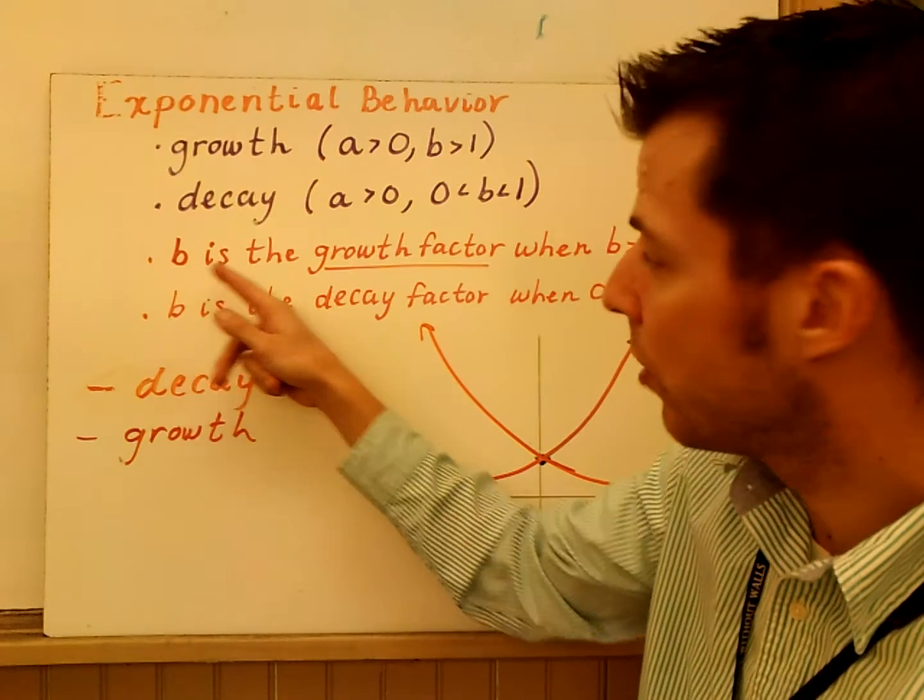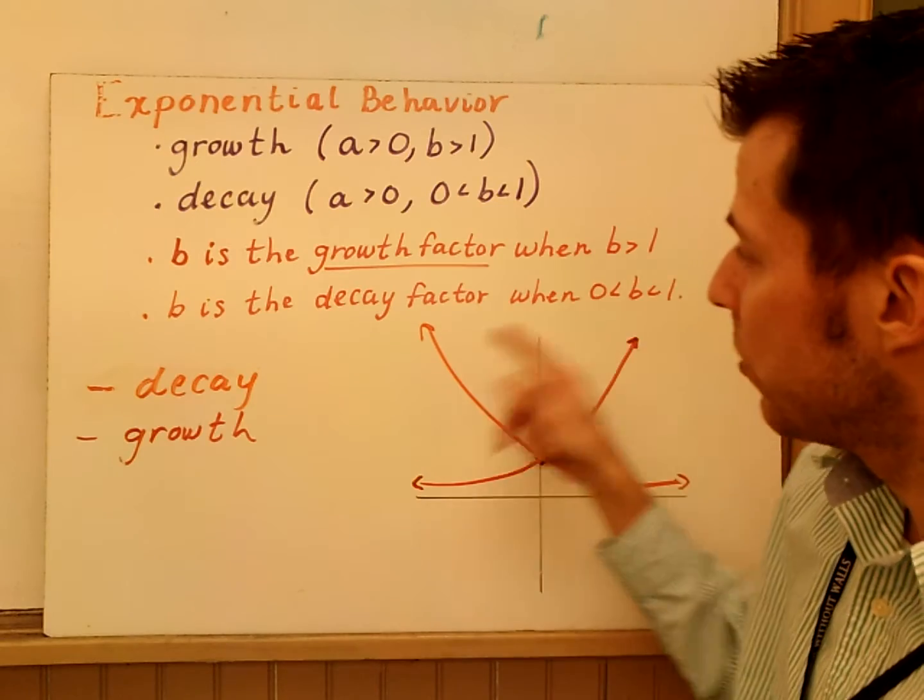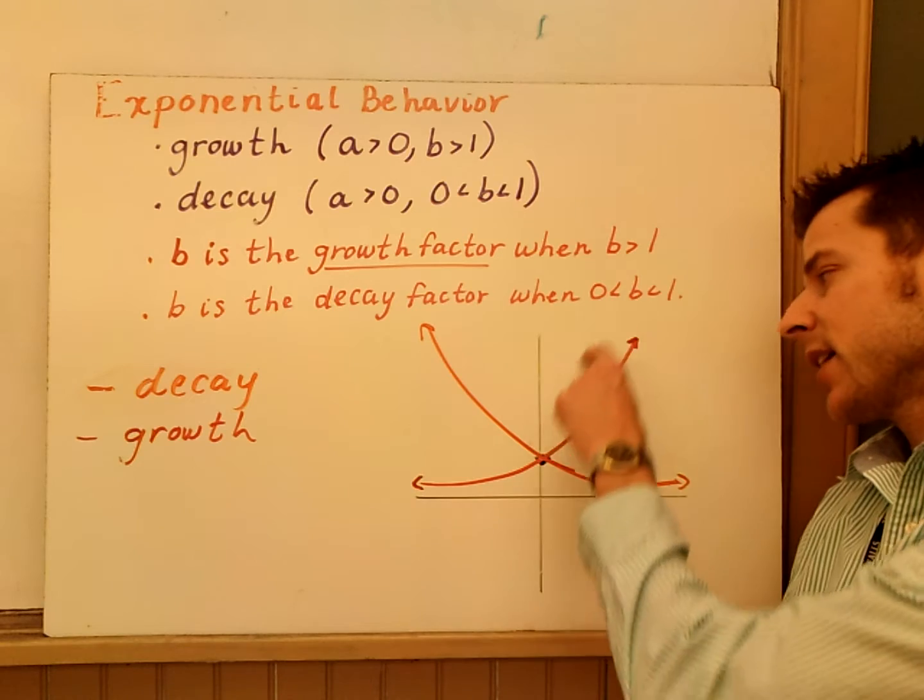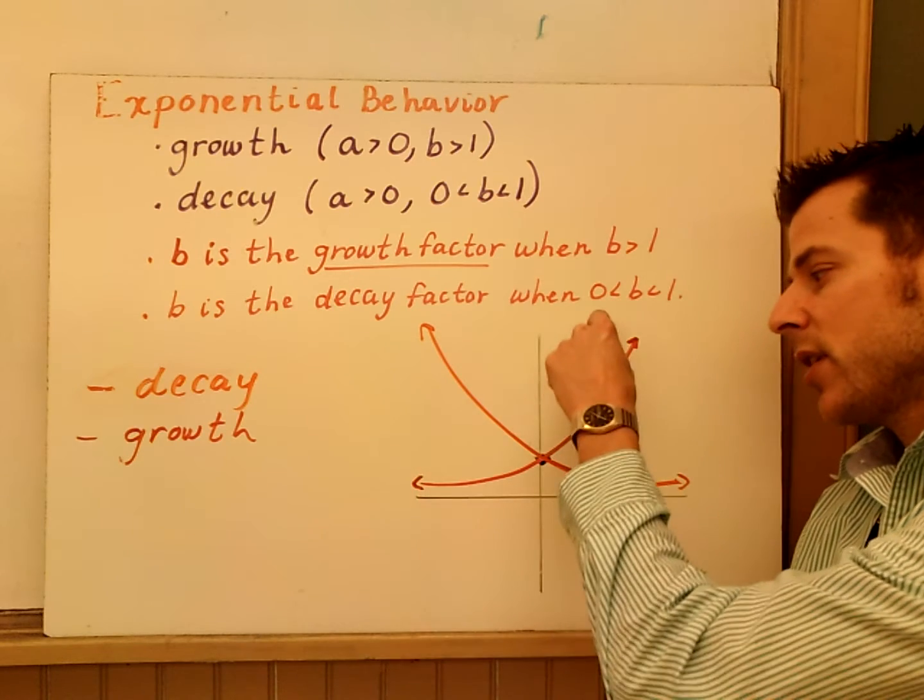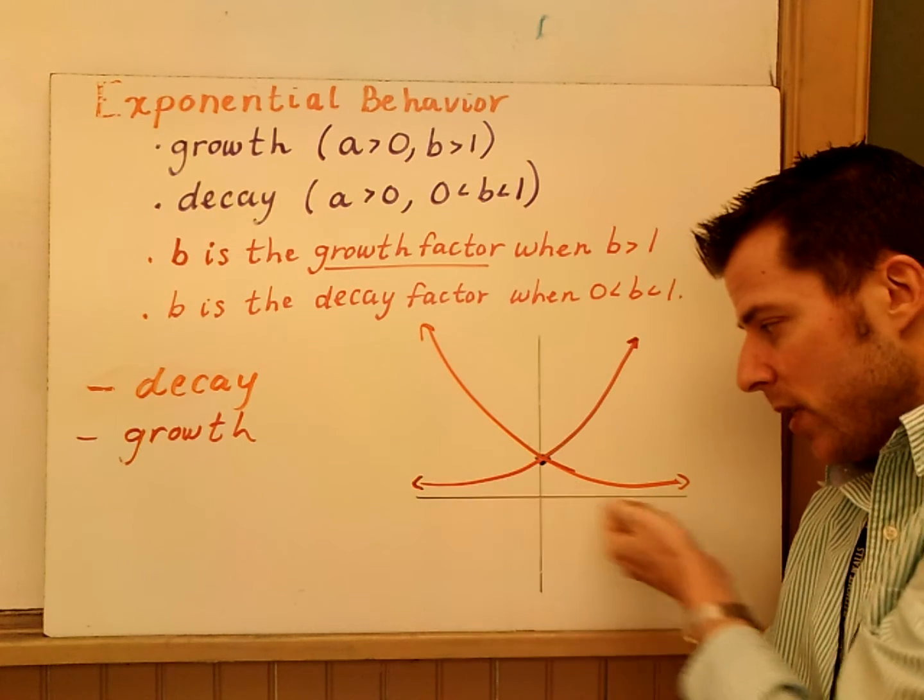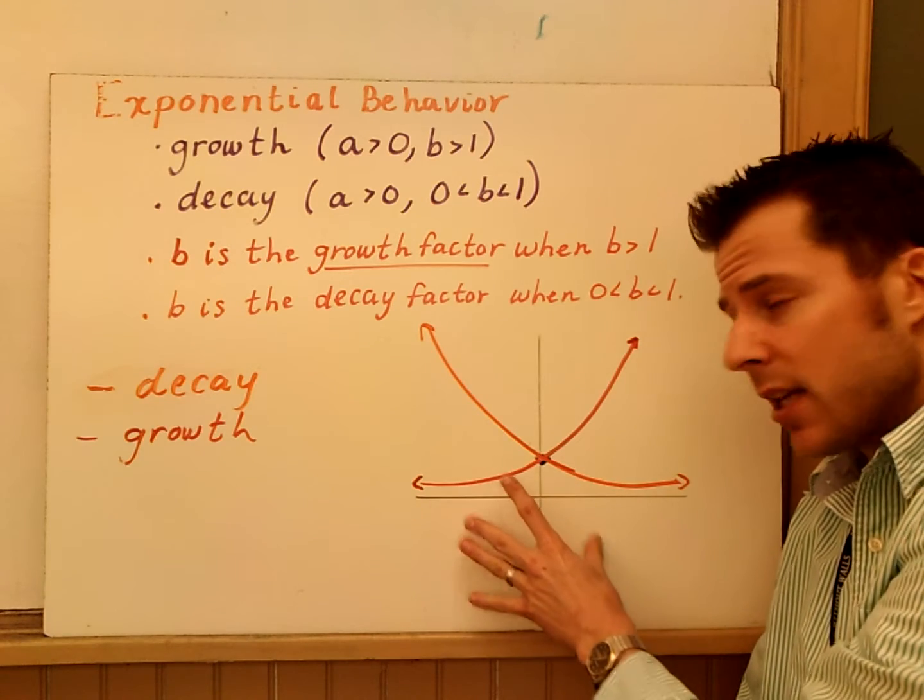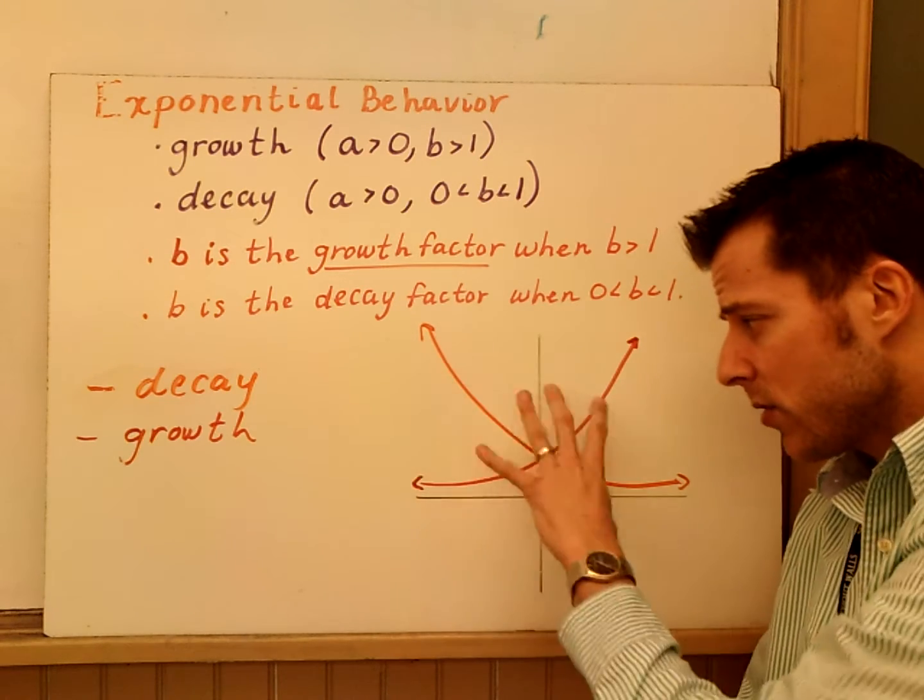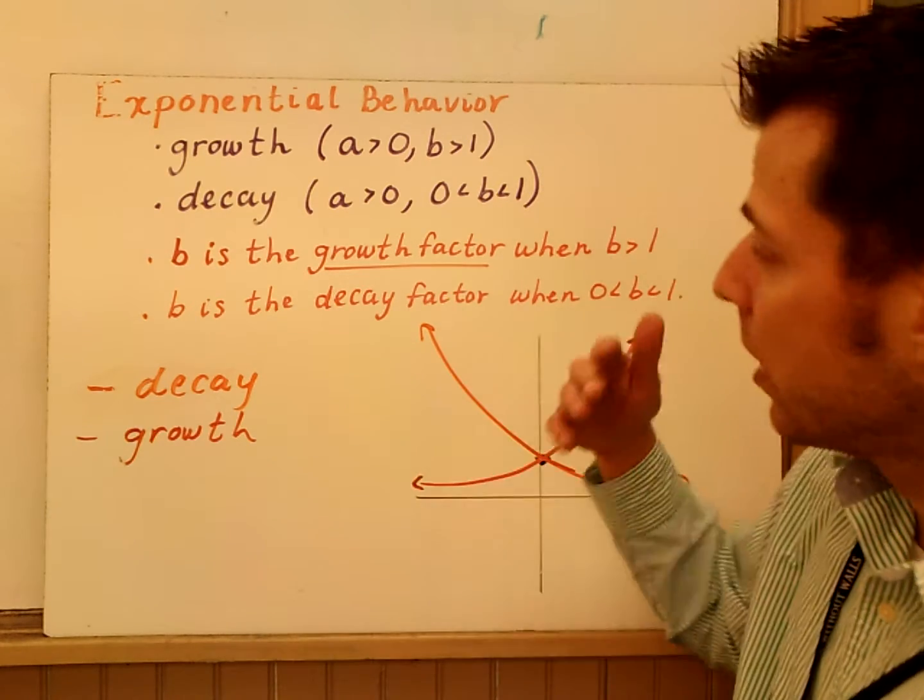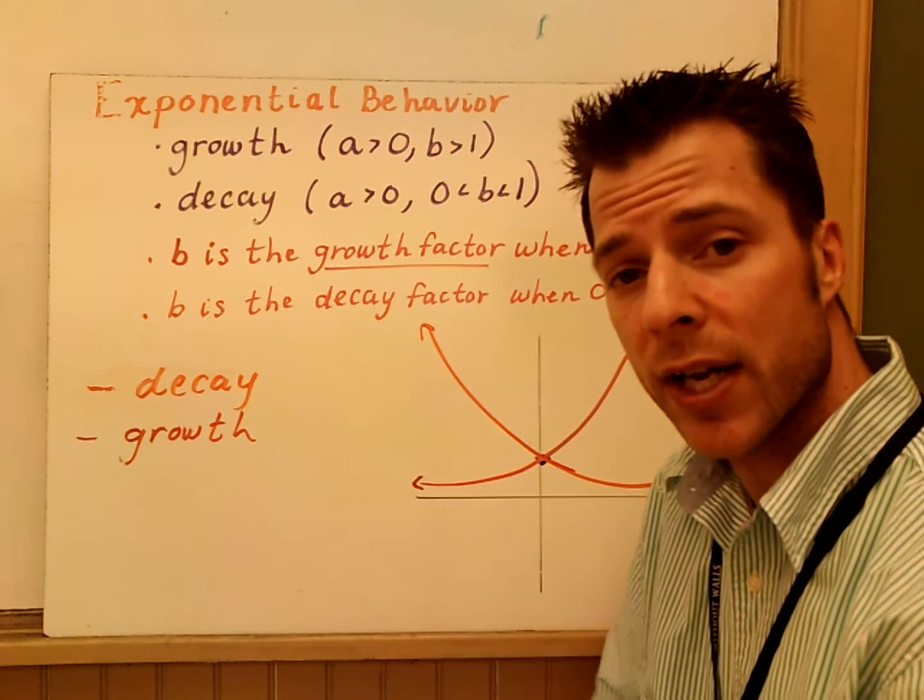If b is exponential growth, then we call b the growth factor. If b is between 0 and 1, we call it decay. So, here's what the graphs look like. In red, we've seen that's exponential growth. That's when b is greater than 1. And then we have decay when your b value is between 0 and 1. So, it's coming down. Notice how decay is not below the axis. Again, that will come later on. But there's the general shape of those two graphs. So, there's two types, exponential growth and decay. Depending on what your b value is, that will tell you whether or not you have growth or decay.